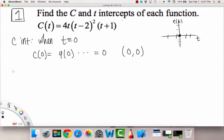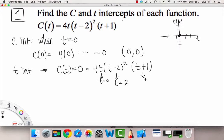Now let's find the t-intercepts, our horizontal ones. What makes c of t equal to zero? So we have 4t(t-2)²(t+1). What would make that be zero? Well, t is equal to zero is one of them. Another one would be t equals positive two, and the other would be t equals negative one.